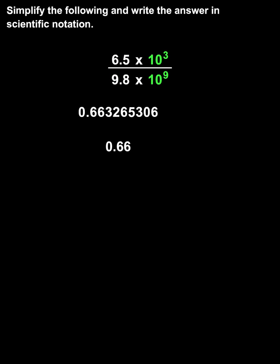Next, we divide the powers of 10, in this case 10 cubed divided by 10 to the 9th. And since we're dividing two powers that have like bases, we subtract the exponents and leave the base the same, to get 10 to the 3 minus 9, or 10 to the negative 6th. So we have 0.66 times 10 to the negative 6th.